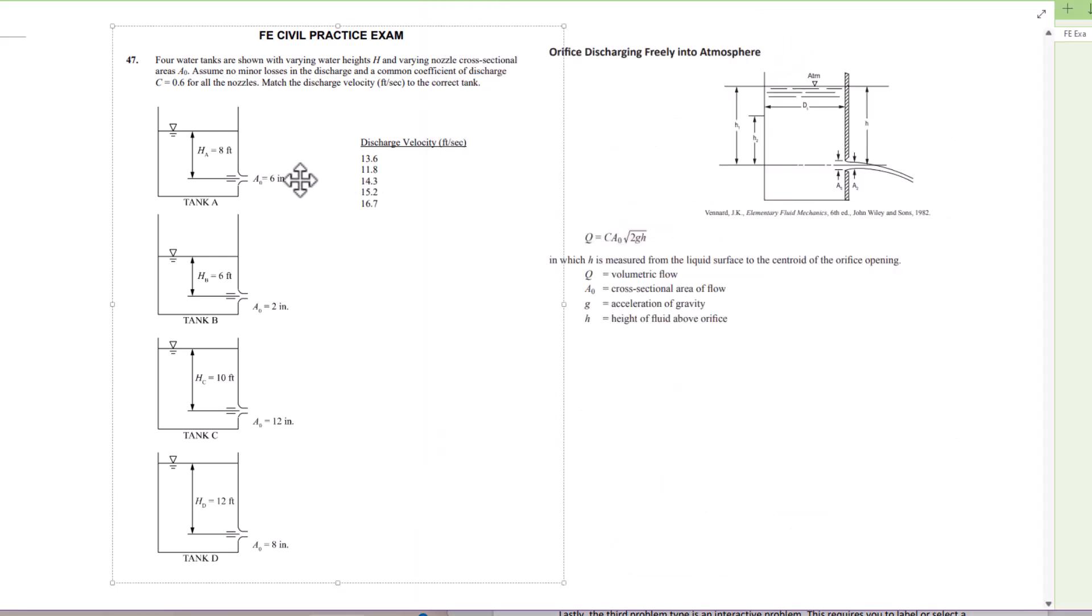So we have this problem here and this is taken from the sample NCEES gives you for the FE civil exam. This is not taking from any of their purchase products. This is literally what they show if you want to have a sample of what their practice test is like, which I suggest purchasing. Here it says that four water tanks are shown with varying water heights H and varying nozzle cross-sectional areas A₀. Assume no minor losses in discharge and a common coefficient of discharge C of 0.6 for all nozzles. Match the discharge velocity in feet per second to the correct tank. We actually almost skipped a step here.